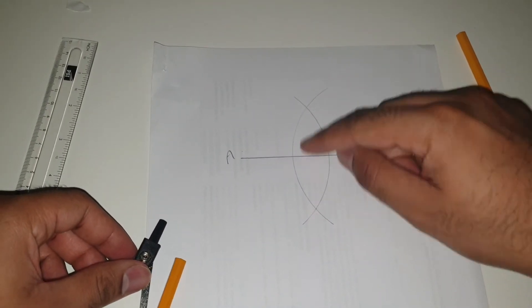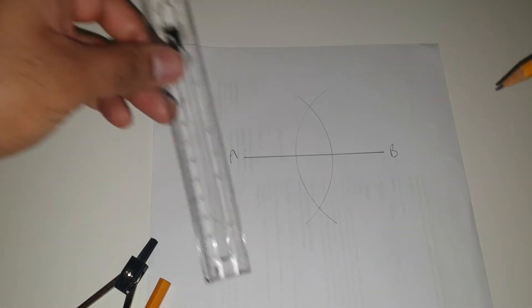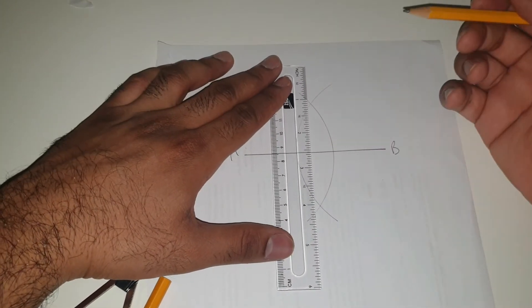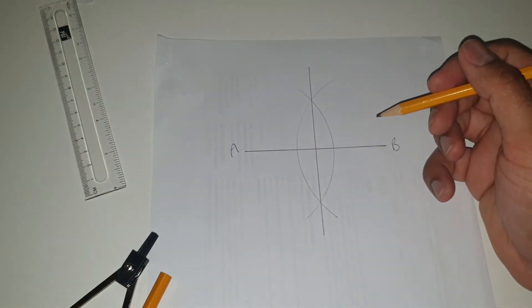Now as you can see, there are two intersections, one up there and one down there. And then all you're going to do is take your ruler or scale and draw a line through those two points.